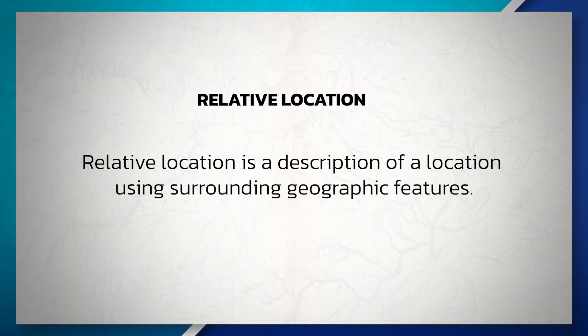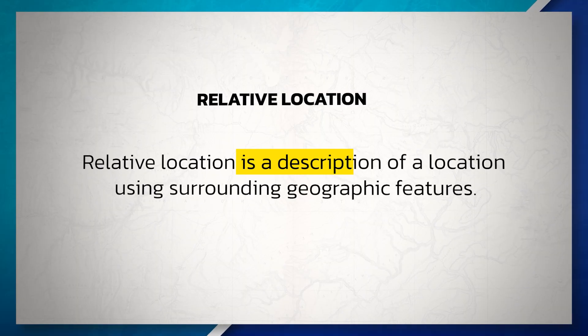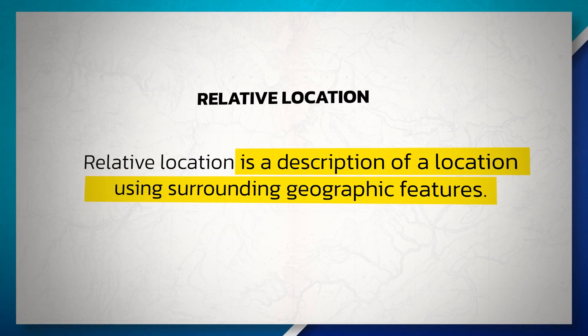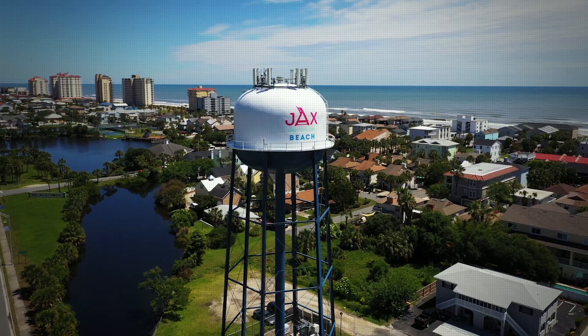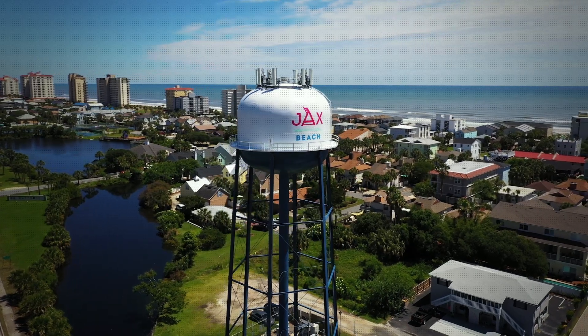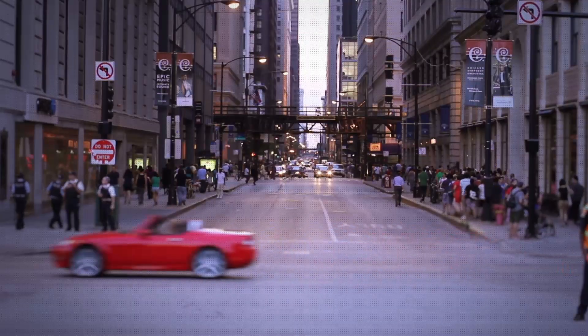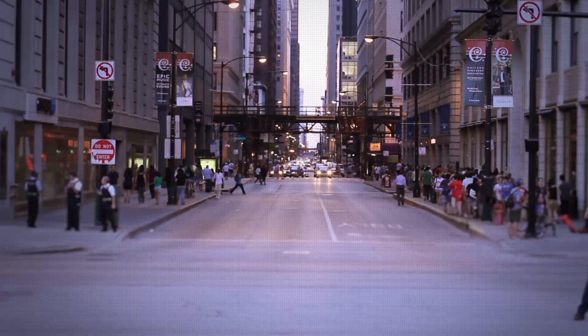Relative location, on the other hand, is a description of a location using the surrounding geographic features. For example, my house is near the water tower and the fire station. Understanding both absolute and relative location allows us to better understand the different characteristics, interactions, and spatial relationships of a place.